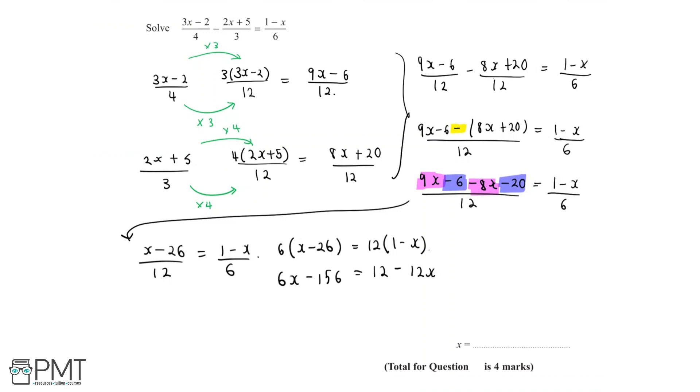Now let's isolate the x terms and bring all of the x terms to one side. We'll move the minus 12x to the left-hand side and we'll move the minus 156 to the right-hand side. So we end up with 6x plus 12x, which is 18x, equals 12 plus 156, which is 168.